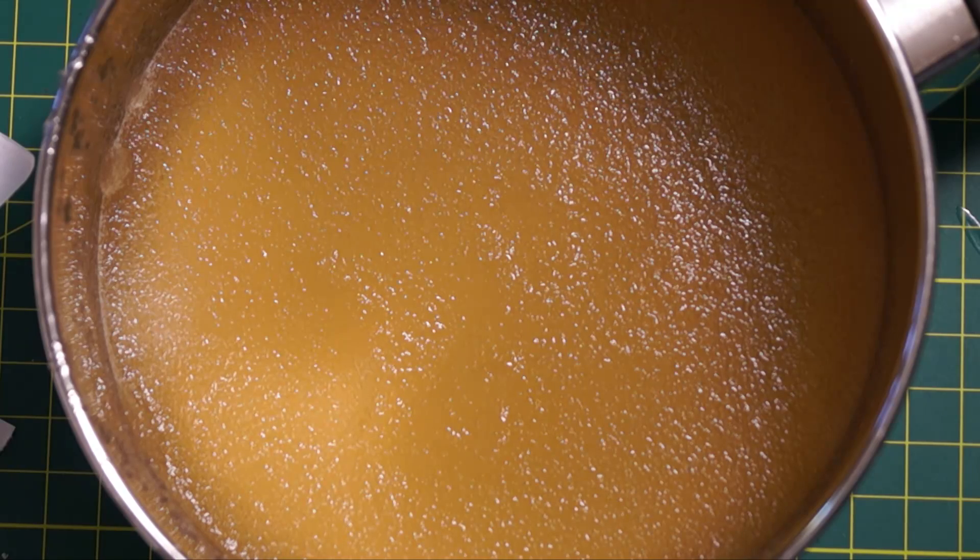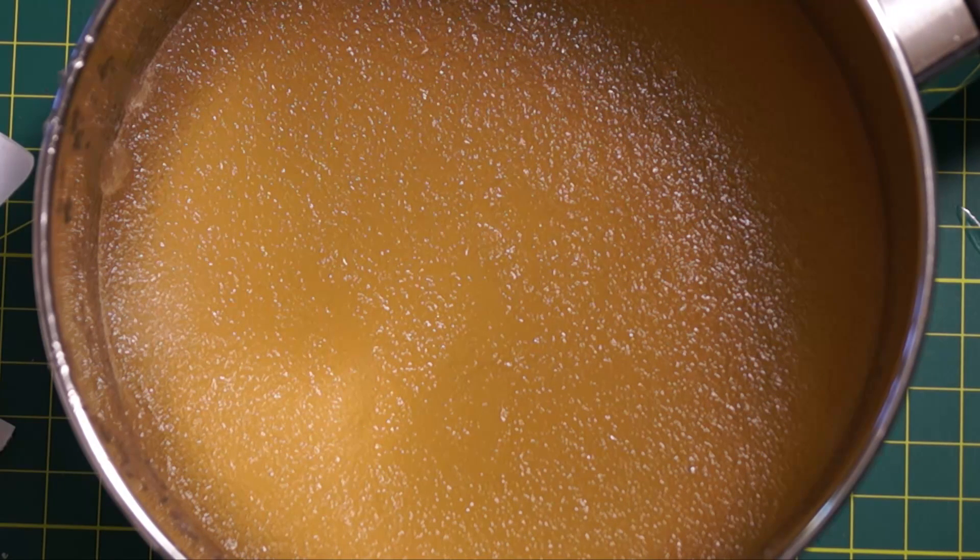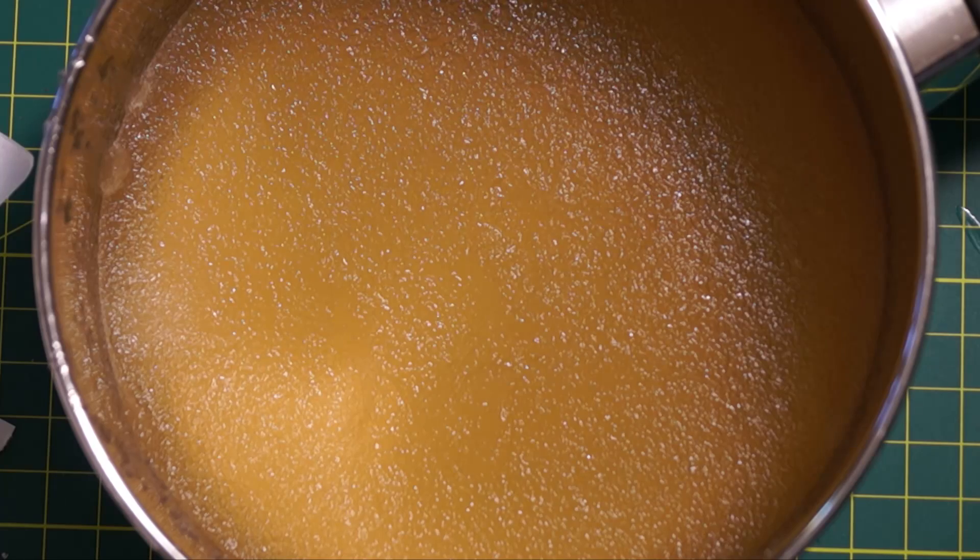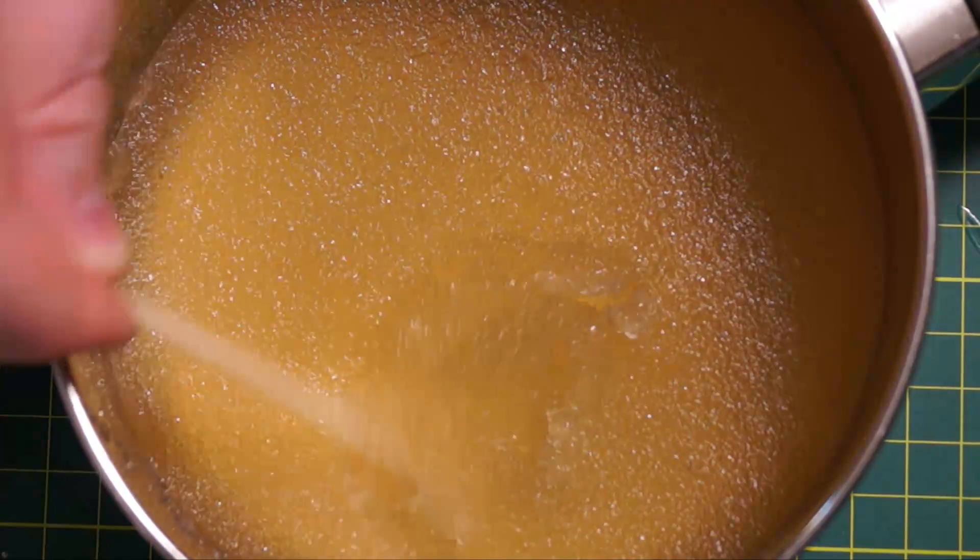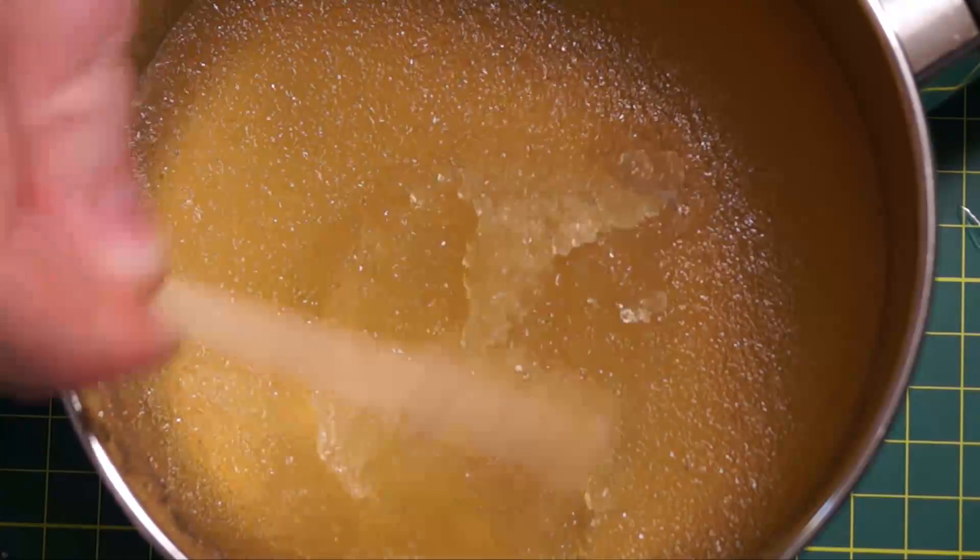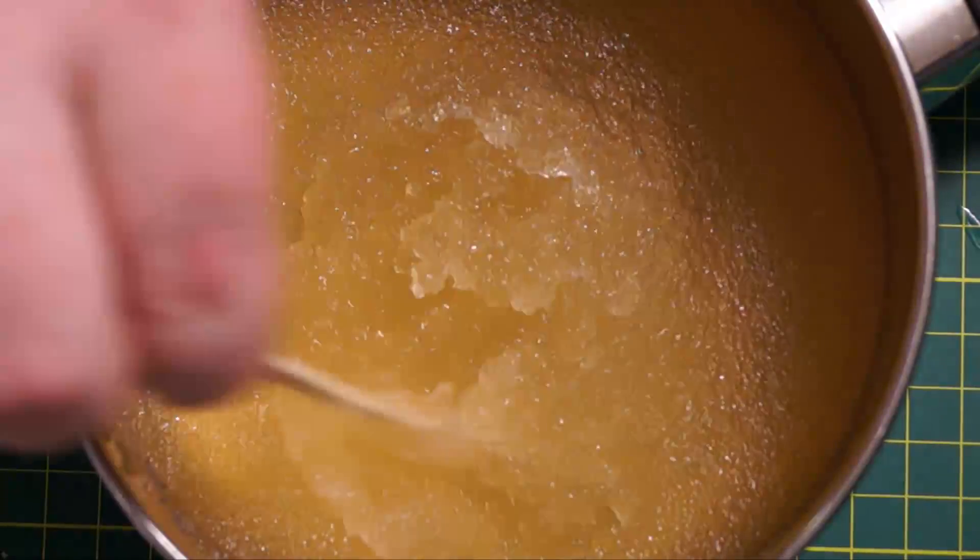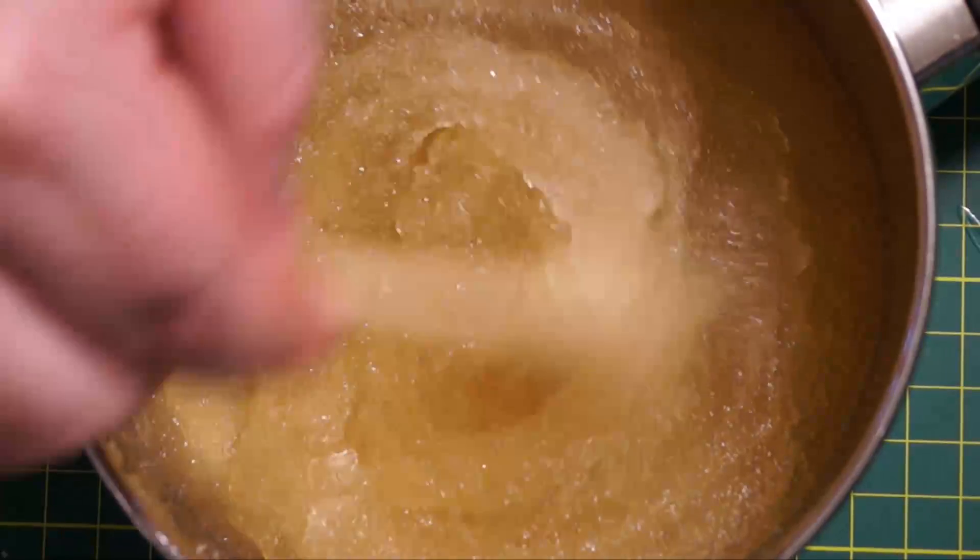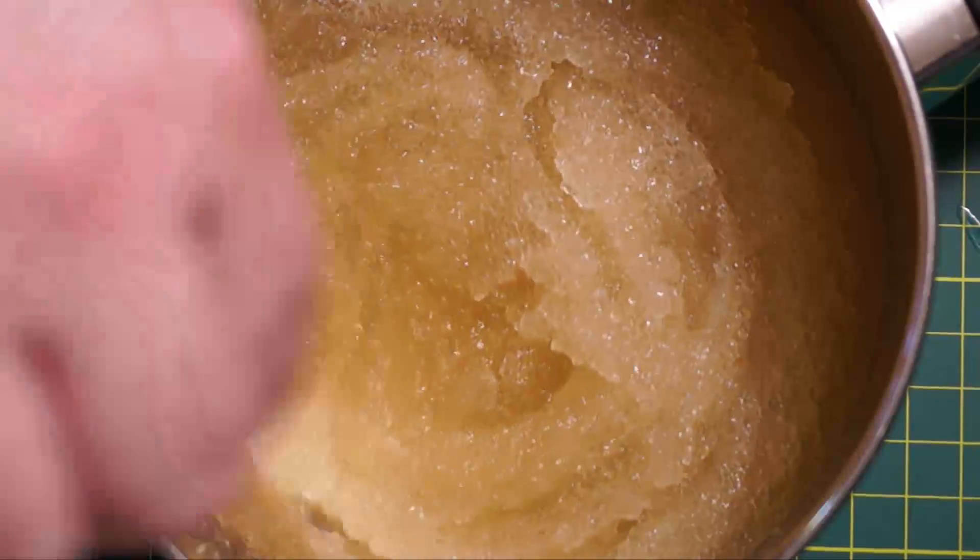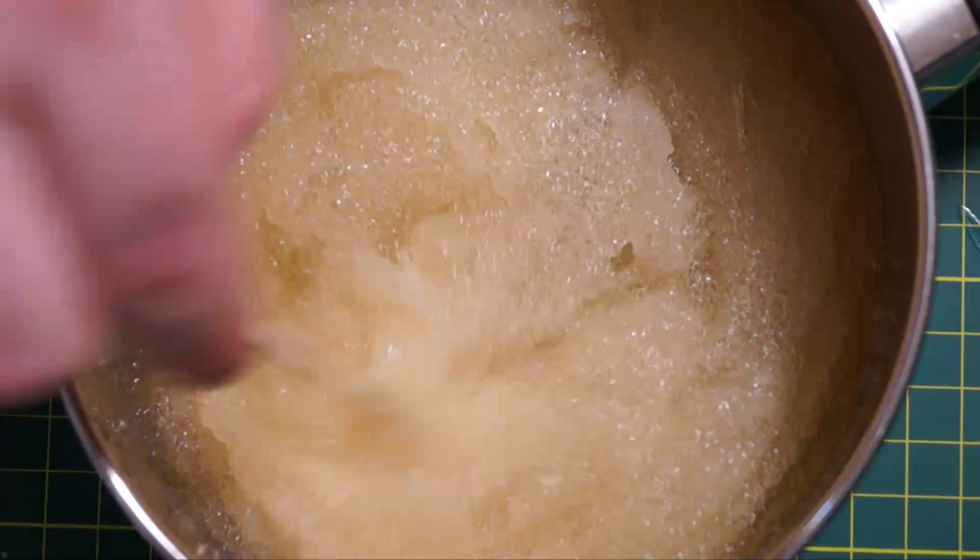Now this is sped up 5,000 times. So you can see the gelatin bloom. Once it has bloomed, then we're going to start mixing it again, just briefly. So you can see it's become the consistency of porridge. And we'll mix that up just to aerate it a little bit. So it'll look like it's going a little bit whiter. It's just air bubbles forming inside.